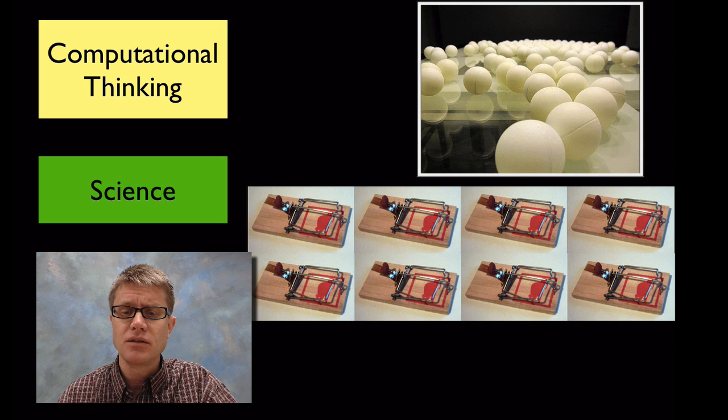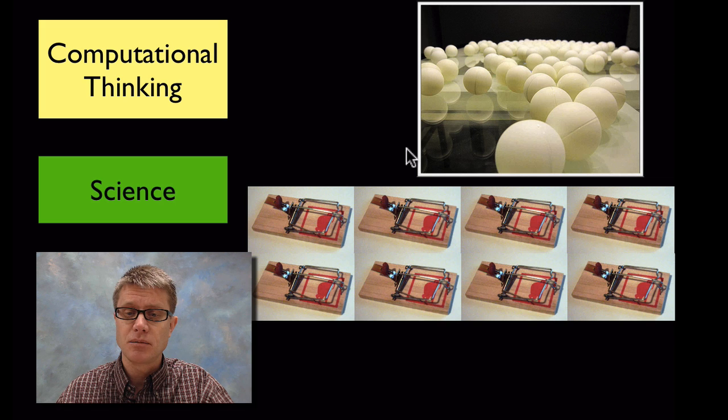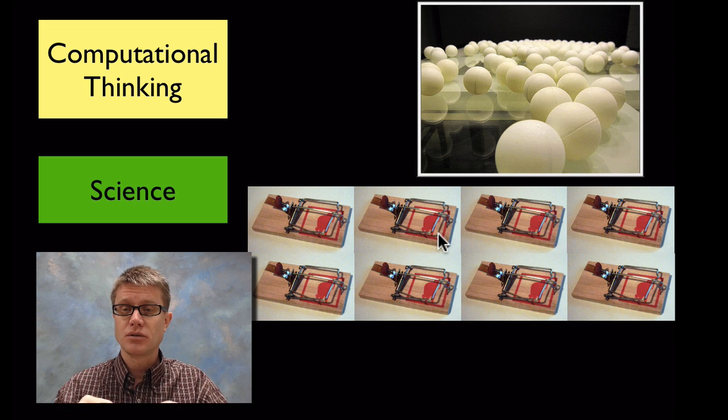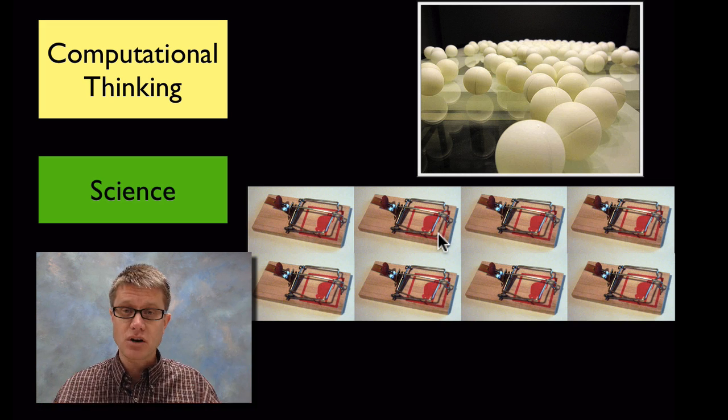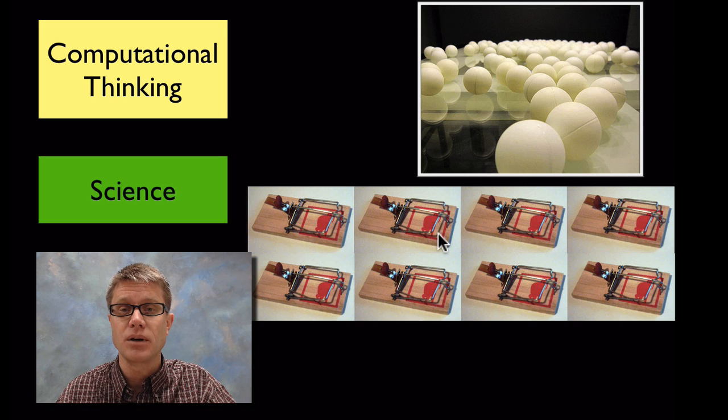Let me give you a concrete example of that. You've maybe seen this demonstration before. The idea is that if we put a bunch of mouse traps around in, let's say, a gymnasium and we balance on each of them two ping pong balls, and then we were to trigger that, those ping pong balls will fly up into the air and land on other mouse traps which will trigger more mouse traps. And so you have what's called a chain reaction going on.